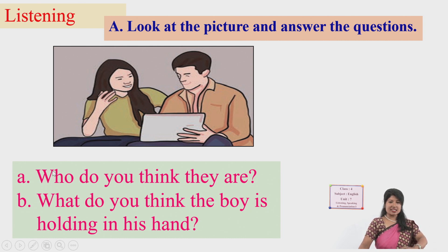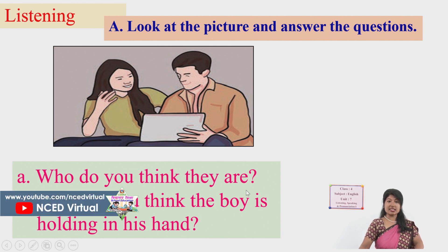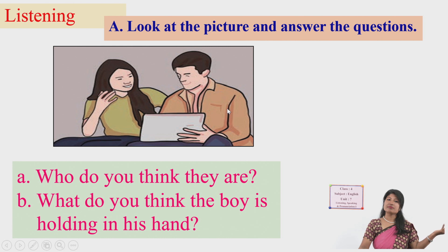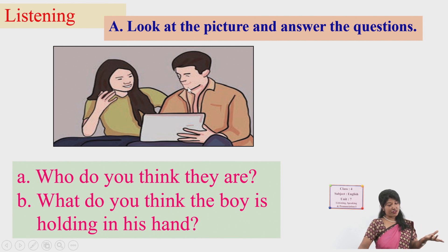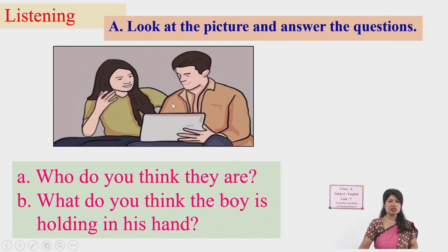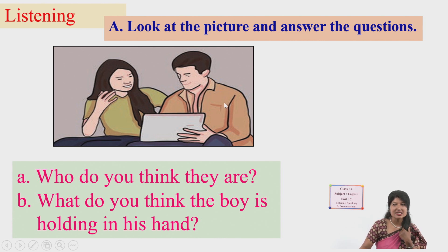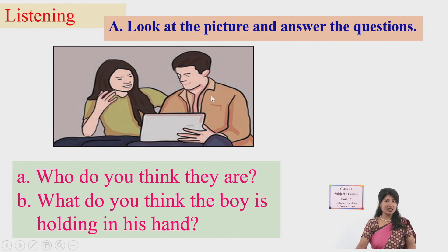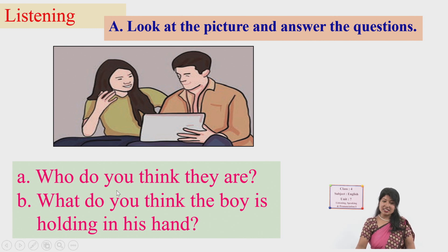He is showing something to the lady. Make a guess — who do you think they are? They may be friends. The way they are sitting, they must be friends or known to each other, because they are sitting very close in the chairs. So it could be friends. What's your guess? They might be friends. Any other guesses? You must have your own guesses — we will find out later on.